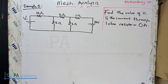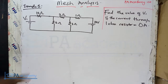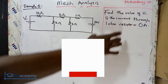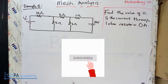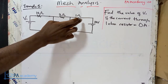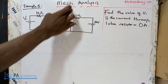Hello and welcome to PE Academy. This is Example 5 under mesh analysis. We've looked at four different examples and an introduction to mesh analysis. This question is similar to the one in Example 4, just with the positions of items different. We need to find the value of V1 given that the current through the one-ohm resistor equals zero.